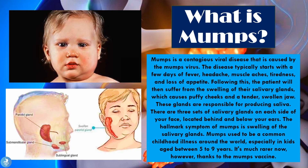So what is mumps? Mumps is a contagious viral disease that is caused by the mumps virus. The disease typically starts with a few days of fever, headache, muscle aches, tiredness and a loss of appetite. Following this, the patient will then suffer from the swelling of their salivary glands, which causes puffy cheeks and a tender swollen jaw. These glands are responsible for producing the saliva, hence the name salivary glands.